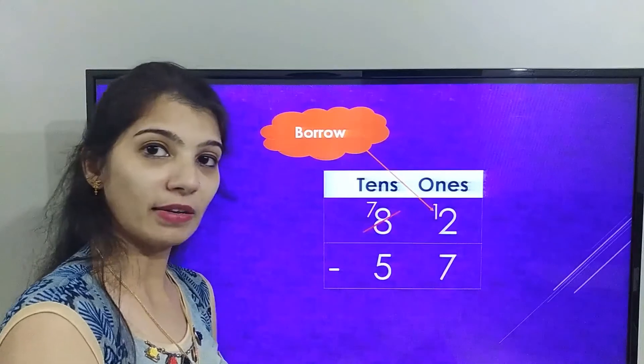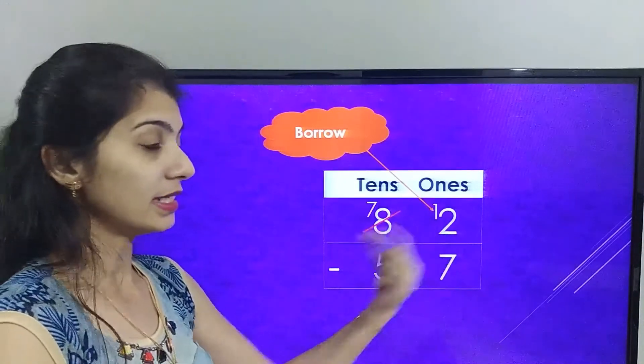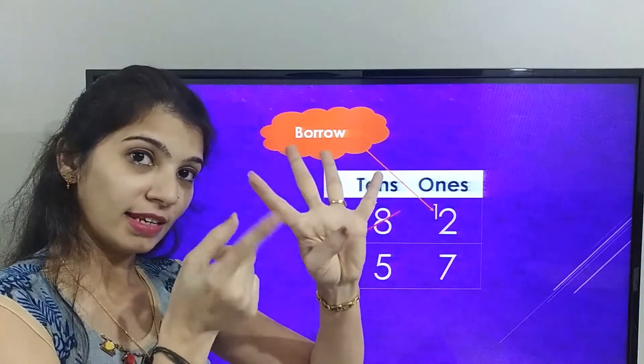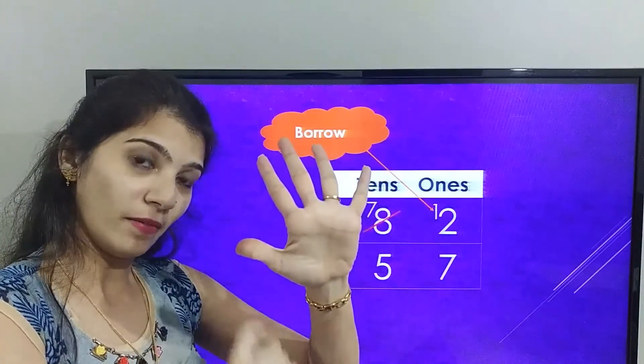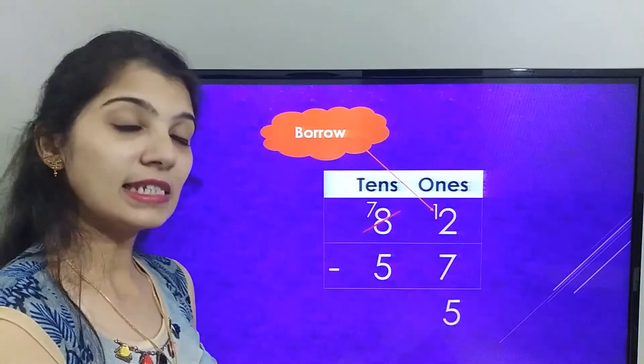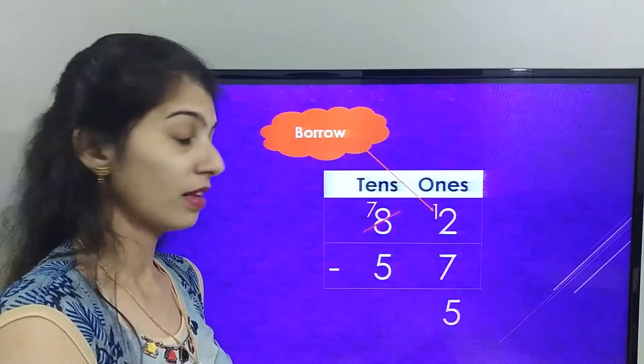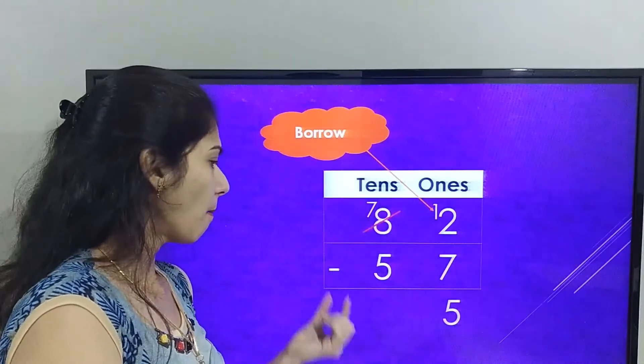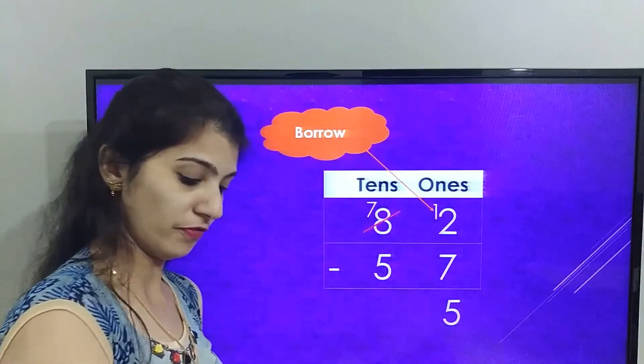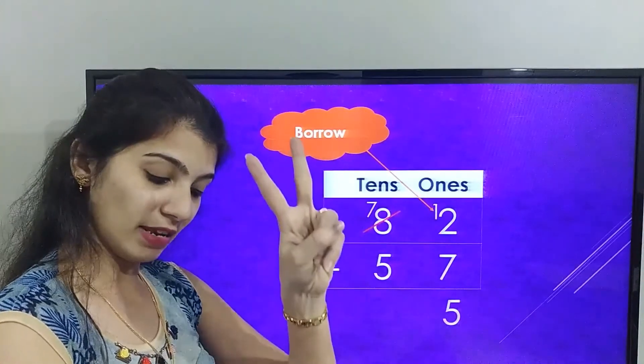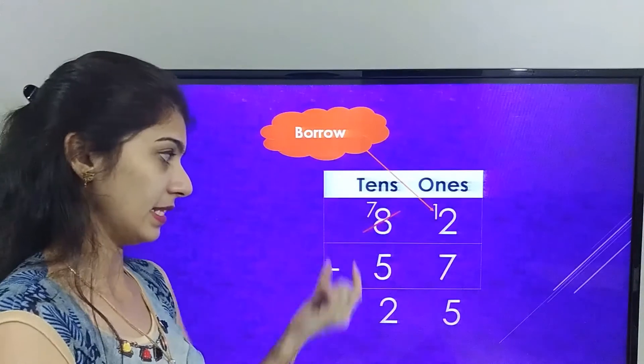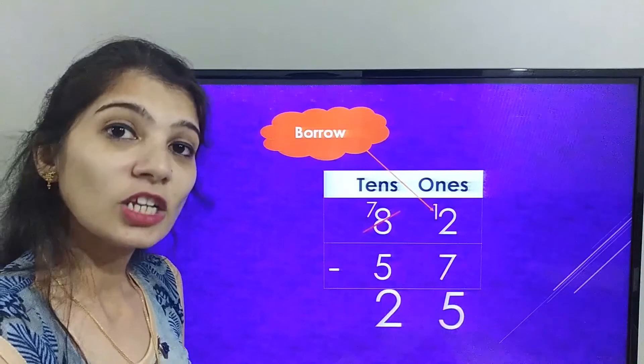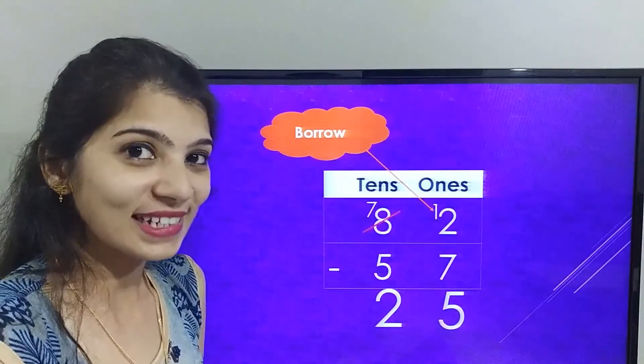So now 12 minus 7. Let's count after 7 till 12. That is 8, 9, 10, 11, 12. So the answer in the ones place is 5. The answer in the tens place is 2. So the final answer we got is 25. Wasn't that easy?